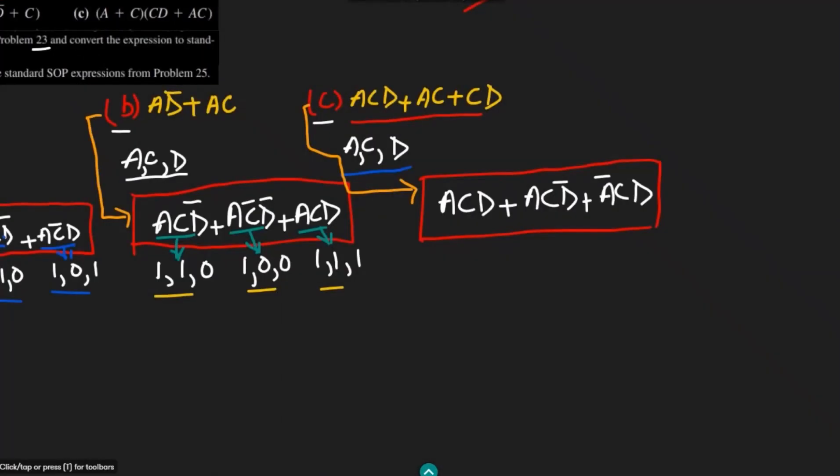For it, the binary value will be 1, 1, 1. For it will be 1, 1, 0, and for it will be 0, 1, 1.